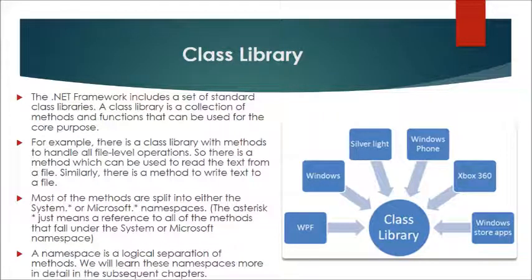Class Library: The .NET framework includes a set of standard class libraries. A class library is a collection of methods and functions that can be used for core purposes. For example, there is a class library with methods to handle all file-level operations, such as a method to read text from a file or write text to a file. Most of the methods are split into either the System.* or Microsoft.* namespaces, where the asterisk refers to all of the methods that fall under the System or Microsoft namespace. A namespace is a logical separation of methods, which we will learn in more detail in subsequent chapters.